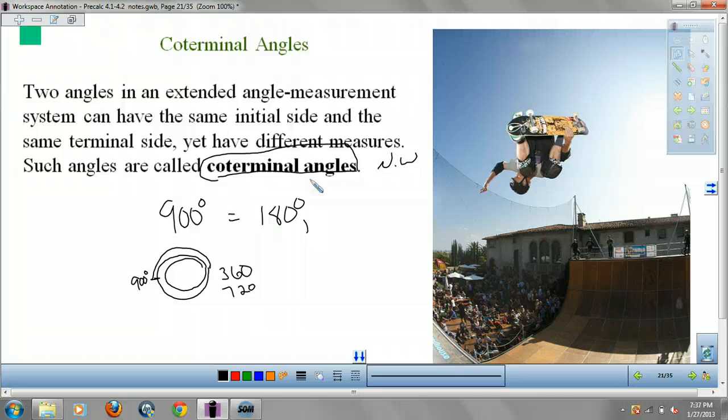If you jumped and you spun around 10 times and you landed where you started, that's 0 degrees or 360 degrees.